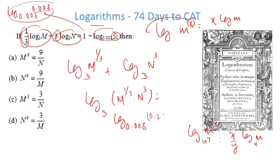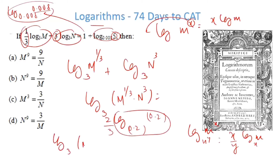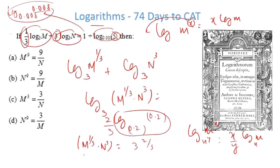Now 0.04 is 0.2 squared and 0.008 is 0.2 cubed. Applying the power rule, this simplifies to 2/3. Taking out the logarithm: 3^(2/3) = m^(1/3) · n. Cubing both sides gives m · n^9 = 3^2 = 9, so n^9 = 9/m. The answer is option B.